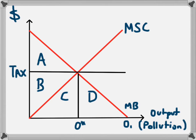Originally the business was receiving the benefit of A plus B plus C plus D and operating at O1. Now the output has fallen back to O*, and the total benefit is A plus B plus C — but the B plus C part goes to the government in the form of tax. The benefit which the business receives is just A.